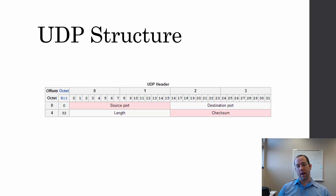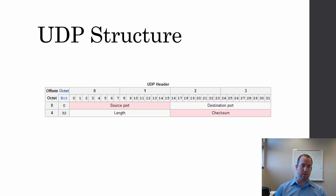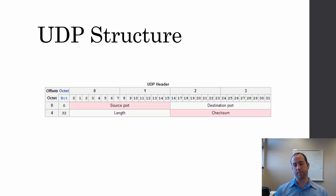At the protocol level, we have a UDP header that has 64 bits. The only information in there is the source and destination ports, a little bit of information about the length of the datagram — which is what the User Datagram Protocol calls its data — and then a checksum to check for errors and make sure that nothing got corrupted on the way.